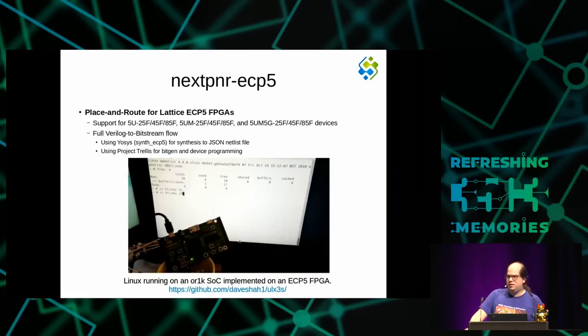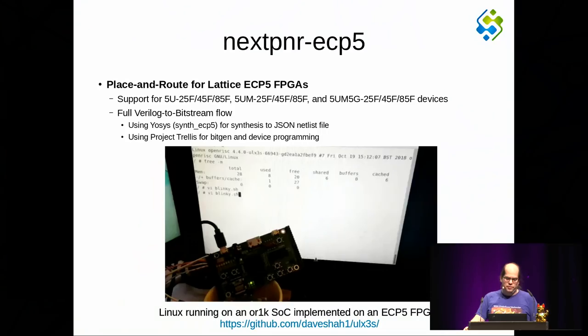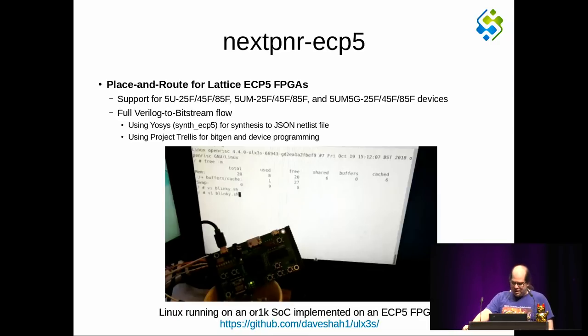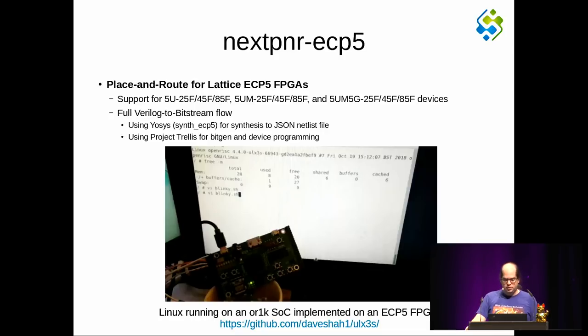Another demo shows that we can work on ECP5. We have support for those devices and a full Verilog-to-bitstream flow again: Yosys for synthesis generates a JSON file, NextPNR does place and route, and then we use the Project Trellis infrastructure for bit generation and device programming. The demo shows Linux running on an SoC in that FPGA — demonstrating we can do place and route for fairly non-trivial designs like a Linux-capable SoC.